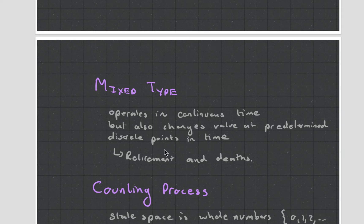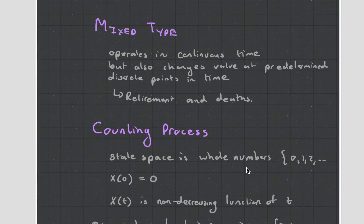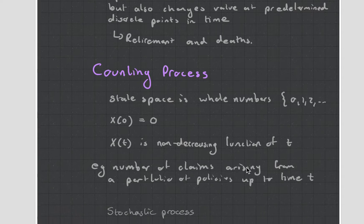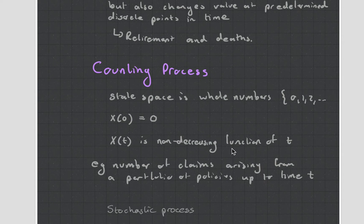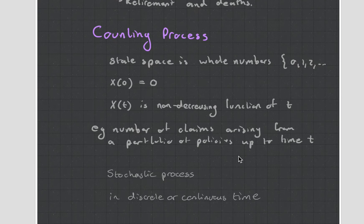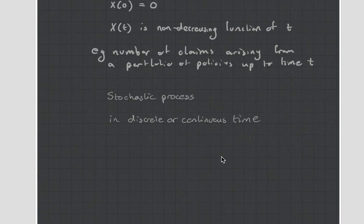Then you have counting processes, where the state space is whole numbers — 0, 1, 2, 3. It's a non-decreasing function, so it's forever going up. You can read about counting processes; they're not too difficult.